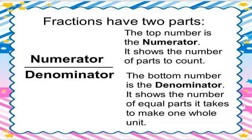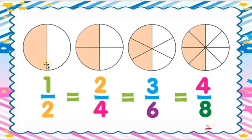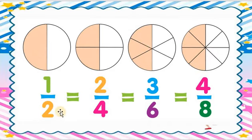Let's understand by example. See, how many circles are there? Four. We take one circle at a time. This fraction is one over two. One is the numerator and two is the denominator. The bottom digit is the denominator, showing the whole part, and the upside shows the number of parts.